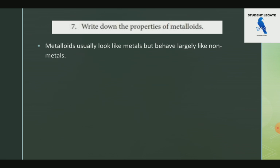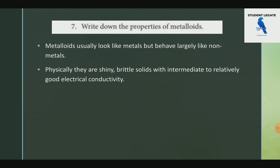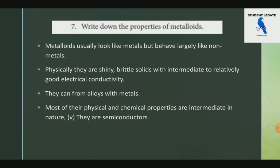Properties of metals: they are shiny solids at room temperature, and are good conductors of electricity and heat. They form alloys with other metals. Properties of metalloids: most of their physical and chemical properties are intermediate in nature — between those of metals and non-metals. That is why they are also called semiconductors. They are solid at room temperature.